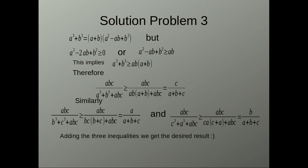and similarly for the other two terms we get respectively A by A plus B plus C and B by A plus C plus C. Now adding these three we get the sum as 1 and therefore our inequality is proved.